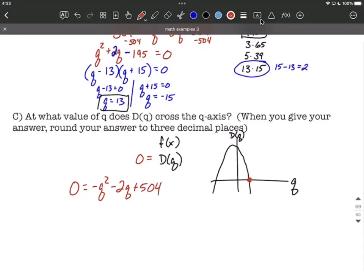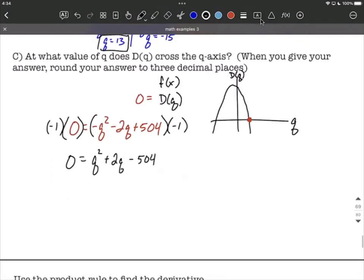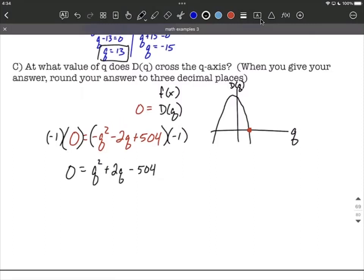Let's think about how we can solve this down. Before I do any solving, I'm going to move everything. You can think of it as adding the q squared, adding the 2q and subtracting 504. Or I like to visualize it as multiply both sides by negative one. Zero times negative one is still zero, but as we multiply each term by negative one, it switches the signs. So positive q squared plus 2q minus 504. Now we have a quadratic equation that we want to solve down. But I don't think 504 is going to factor very nicely for us like we did in part B. So instead, let's pull out the quadratic formula.